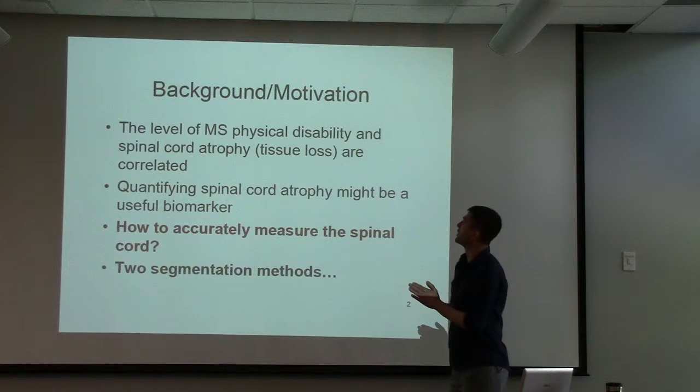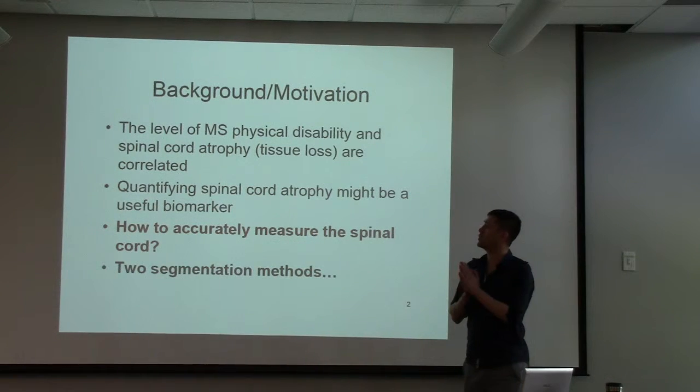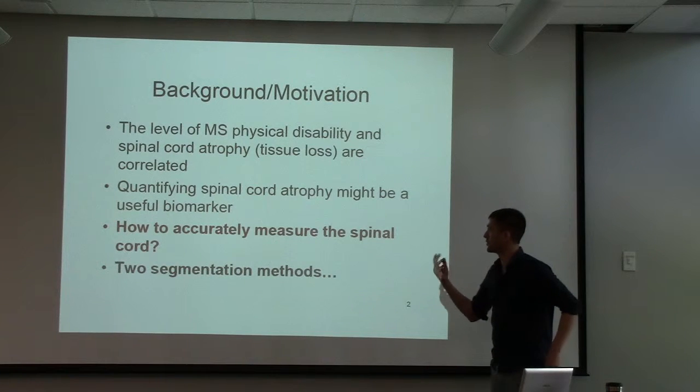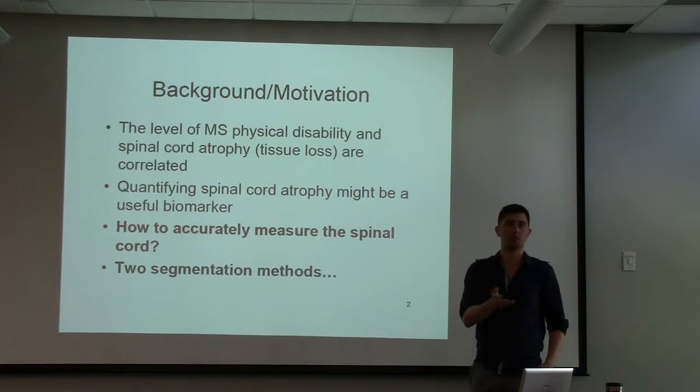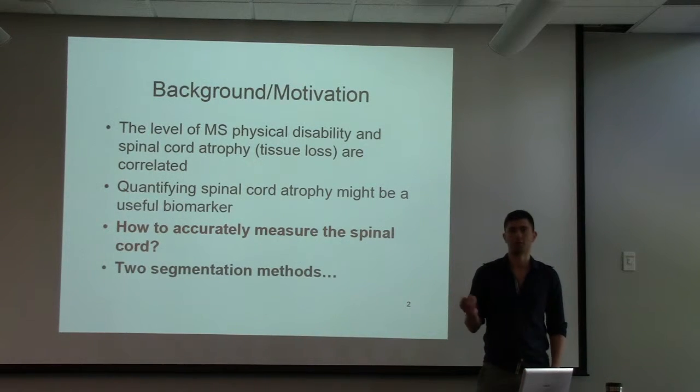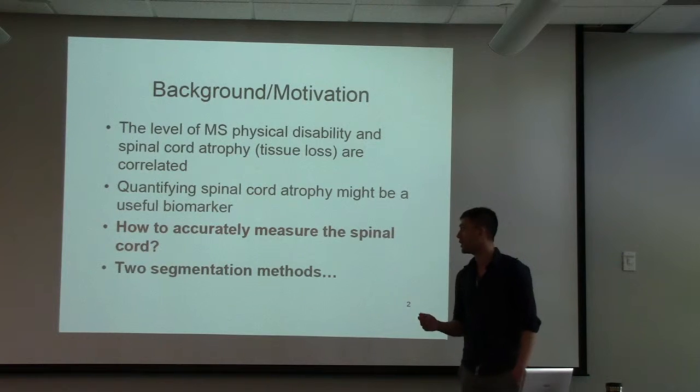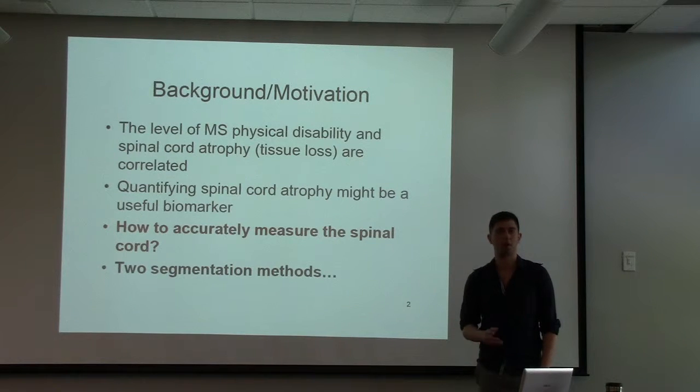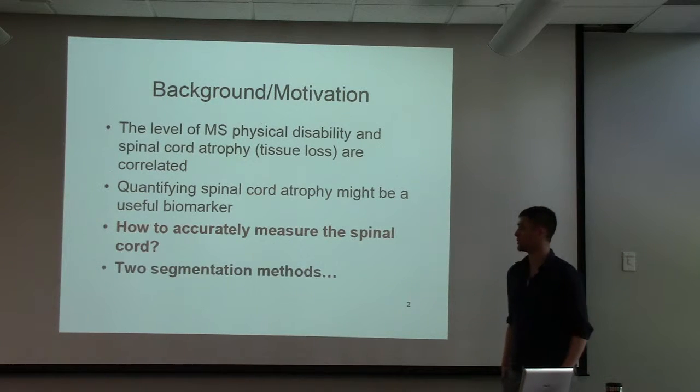So to give you a little bit of background, why would we want to study this? It's been shown in studies that the physical disability in multiple sclerosis patients correlates with spinal cord atrophy, where atrophy is defined as the loss of tissue in the spinal cord. So it's been suggested that if we can quantify this spinal cord atrophy, this might be a useful biomarker to allow us to monitor the progression of diseases or the effectiveness of therapies.